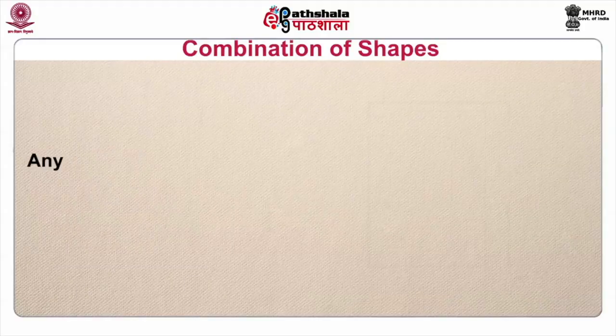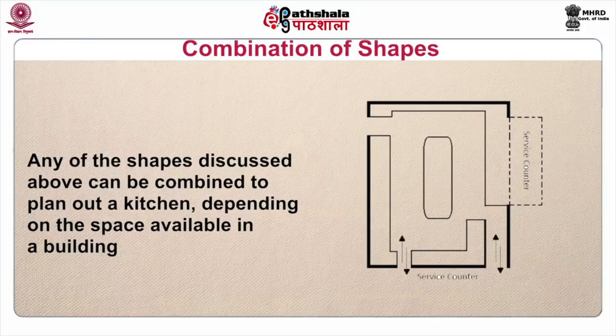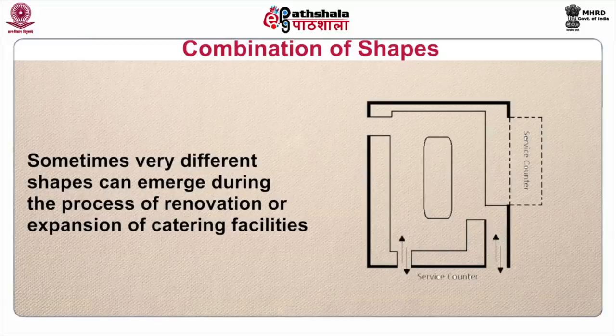Any of the shapes discussed above can be combined to plan out a kitchen, depending on the space available in a building. Sometimes very different shapes can emerge during renovation or expansion of catering facilities. In buildings where catering is not the main activity but complements the main service such as accommodation, conferencing, etc., in hotels or medical services and hospitals, the space allotted to the kitchen is usually what can be spared after the main services are planned. This can lead to unplanned space allocation requiring creativity and innovation to make it effectively operational.